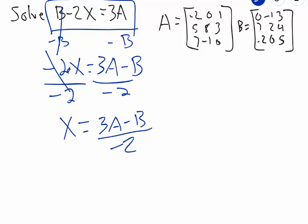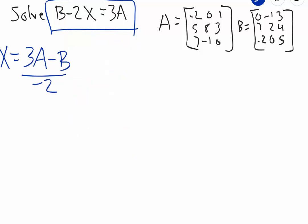So this is the equation we're going to focus on. In order to solve this matrix equation, we first need to find 3A. We have matrix A right over here, and we're going to take matrix A and multiply everything in that matrix by 3 — that's going to be 3A.